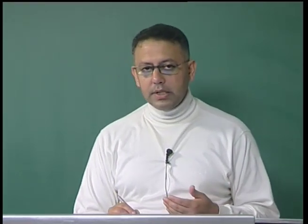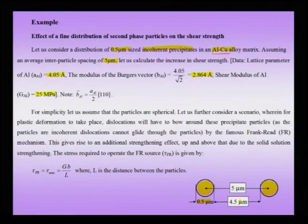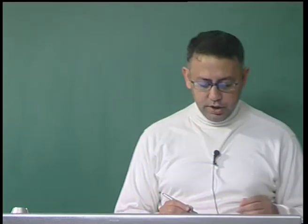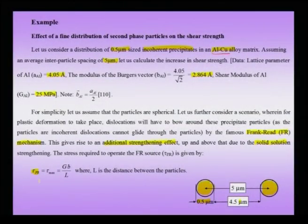What gives rise to hardening in this case? The hardening comes from the fact that when the dislocation moves, there are incoherent precipitates and the dislocation cannot glide through them — instead it will bow around the precipitate by a mechanism known as the Frank-Reed mechanism. We assume the entire plastic deformation is governed by this process. We will find the additional strengthening effect above that due to solid solution strengthening. For that, we need to know the stress required to operate a Frank-Reed source.